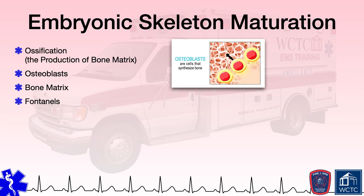Endochondral bones are formed upon hyaline cartilage in a shape similar to the bone it will become. Common for long bone formation, endochondral ossification occurs when osteoblasts secrete osteoid against the shaft of the hyaline cartilage. This osteoid is an unmineralized organic tissue that hardens as inorganic salts are deposited into it, forming hard, mineralized bone. This process begins at the center of the new bone and works outward to the ends, eventually resulting in the creation of the marrow canal within the center and spongy bone at the ends, encapsulated within compact bone.